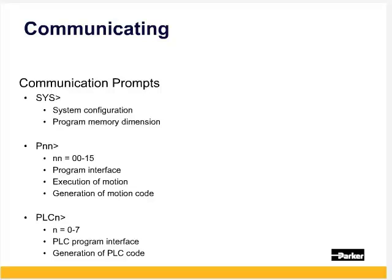At the program prompts, which are PROG zero through PROG 15, this provides a program interface, and you can run the program by typing RUN, or see the program by typing LIST, and also make online edits. You can reach these by typing PROG and then the number, and they are displayed as P and then the number. There are also eight PLC programs, PLC zero through PLC seven, and they have a prompt too.